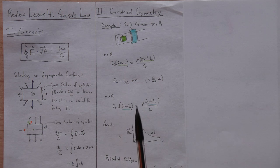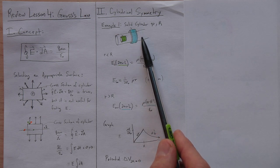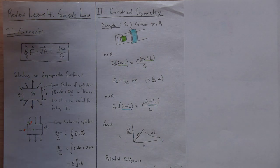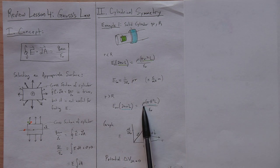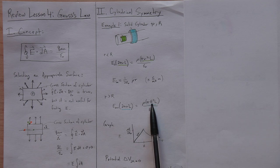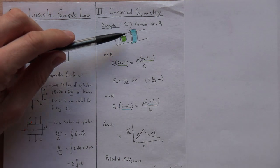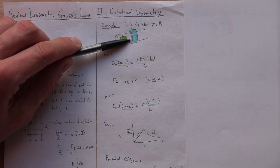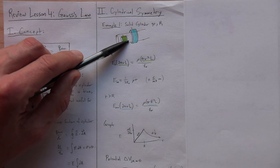For the electric field outside the cylinder (r greater than R), I need a Gaussian cylinder outside the charged region. The left side is still E times 2πrl. The Q enclosed is rho times volume, but not the volume of the Gaussian cylinder — only the volume of the charged cylinder up to capital R. So I plug in capital R, not lowercase r: rho times π R² l over epsilon zero.